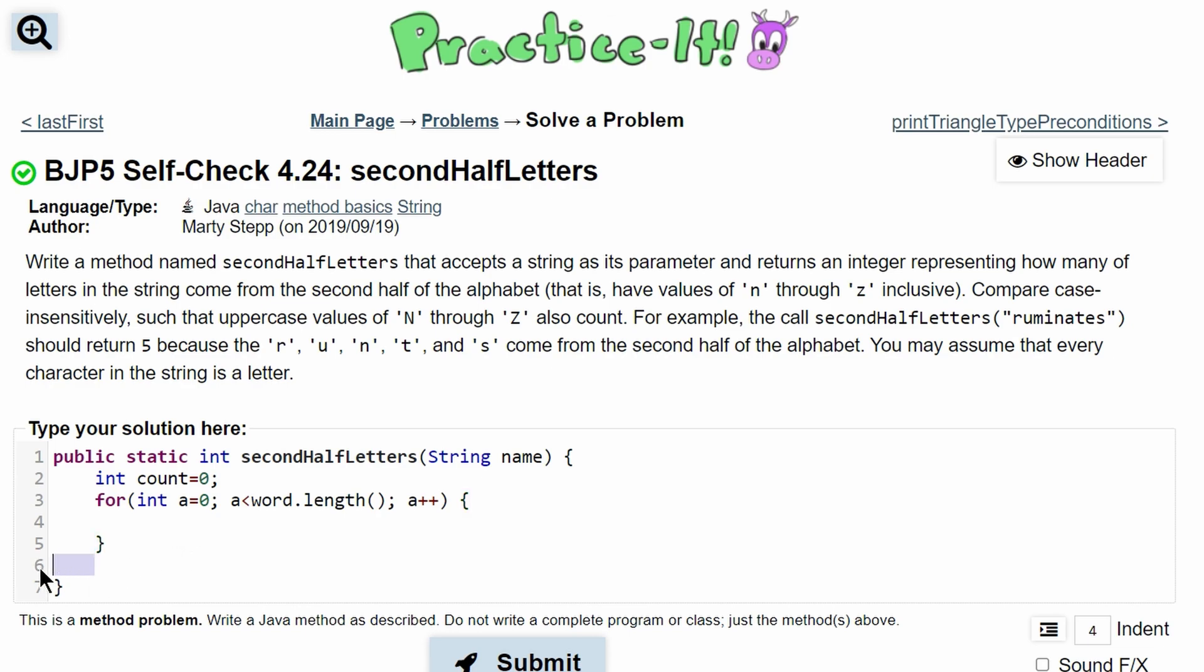Now we need an if statement in here. And this if statement is going to see if our character that we are currently looking at is at the second part of our alphabet or not. So we will have an if. And we can actually use this for loop. We can use this int a to get the character at a since we are incrementing a every single time.